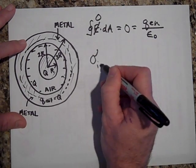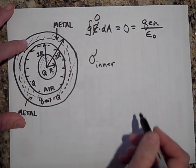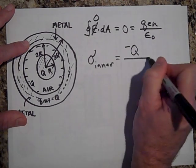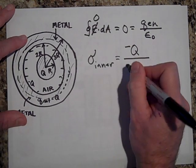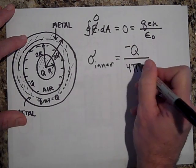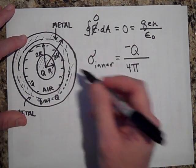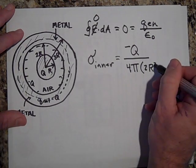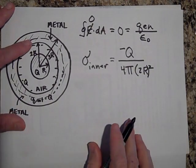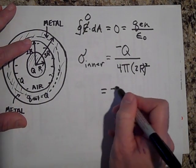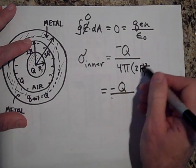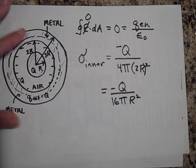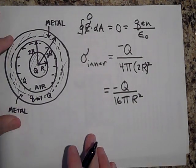So what is the charge density on the inside? What's sigma inner? It's going to be the charge per area. So the negative Q over the area. Now the area is going to be four pi R squared, but R for that inner surface is two R. So I'm going to do two R squared. So that's going to be negative Q over 16 pi R squared.